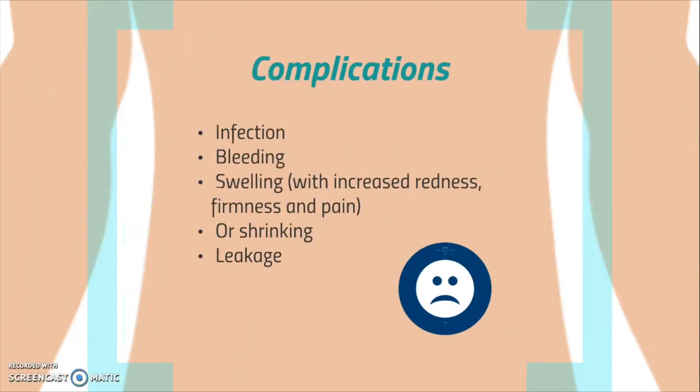The symptoms can vary considerably between patients. This is because the location and severity of the malformation differs from one person to another. Common complications with lymphatic malformation are, for example, infections and bleeding. Certain events, such as puberty, infection, or bleeding, can cause the malformation to swell. The malformation then becomes more red, firm, and can cause pain.